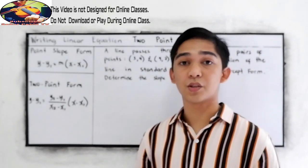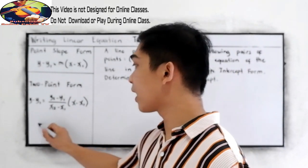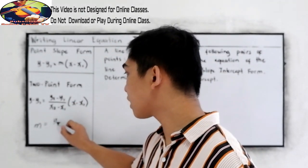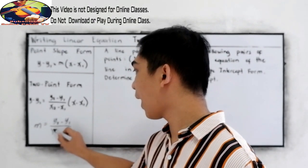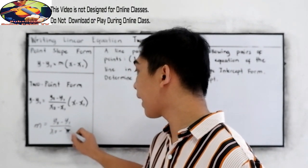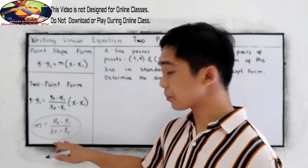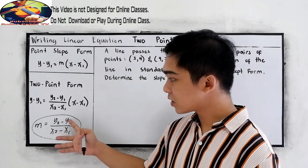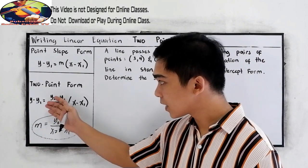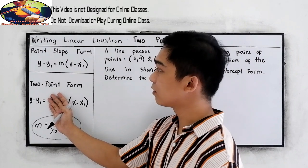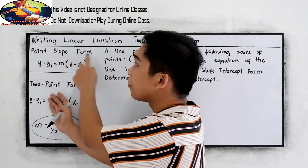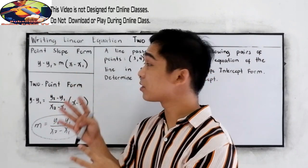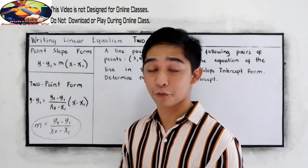In our previous lesson, we discussed that the formula in getting the slope, if we have 2 points, is y sub 2 minus y sub 1 all over x sub 2 minus x sub 1. Notice that if we're going to substitute this formula to m here, we can get the point slope form. That would be the relationship of the two, the point slope form and the two point form.